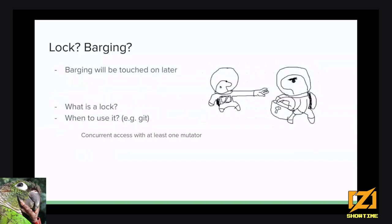There are two words that may have been confusing: lock and barging. We'll get to barging later, but a lock is effectively — you can think of it conceptually as having ownership of some resource. A bathroom stall is a good example: ideally only one person can be in there. Similarly in Git, only one person can edit the code, and if you have multiple people, it can cause problems or data corruption. So a lock ensures that only one thing is updating something at a given time.